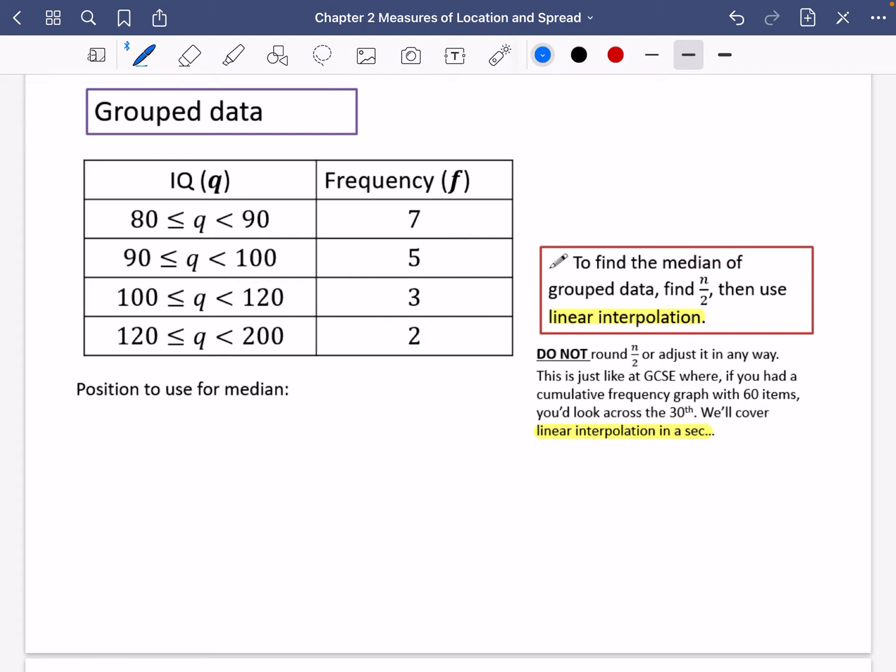All we're going to do now is think about which position will be the median. So I need to find out how many there are. I'm going to add up these values. So seven and five adds to 12. Add on a three, 13, 14, 15, 16, 17. I'm just going to check that's right. That's 12 and five. They add up to 17.